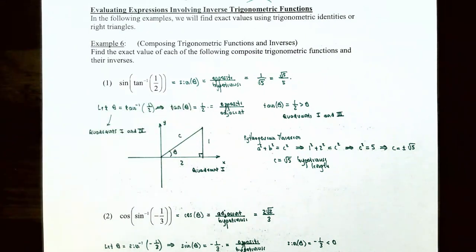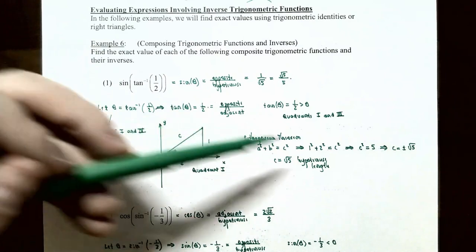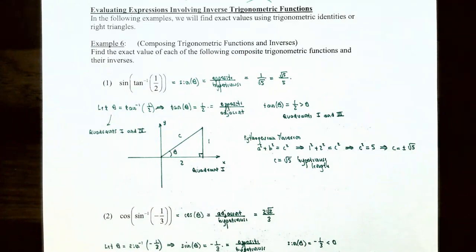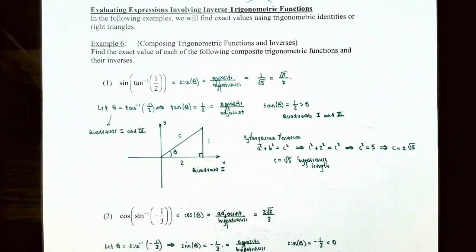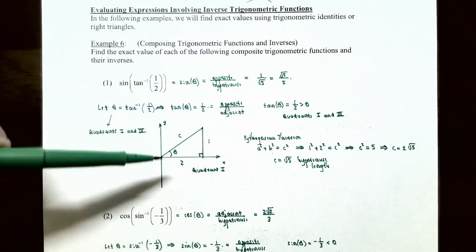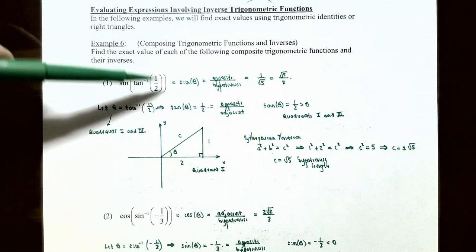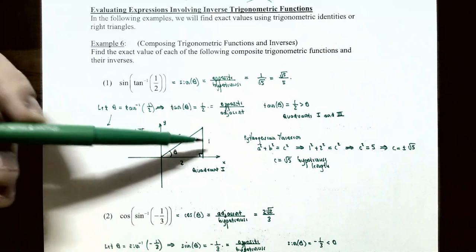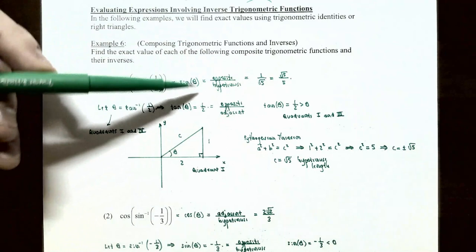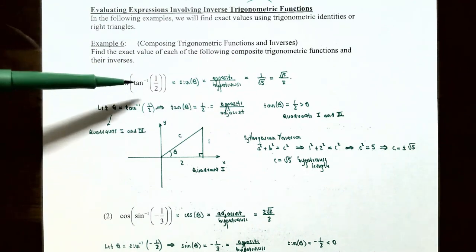We have a missing side — the hypotenuse, which we'll call C. Using the Pythagorean theorem, A squared plus B squared equals C squared: one squared plus two squared equals C squared, so C squared equals five, giving C equal to square root of five. Now we know all three sides: opposite is one, adjacent is two, hypotenuse is square root of five. Sine of inverse tangent of one-half equals sine of theta, which is opposite over hypotenuse: one over square root of five. Rationalizing the denominator gives square root of five divided by five.